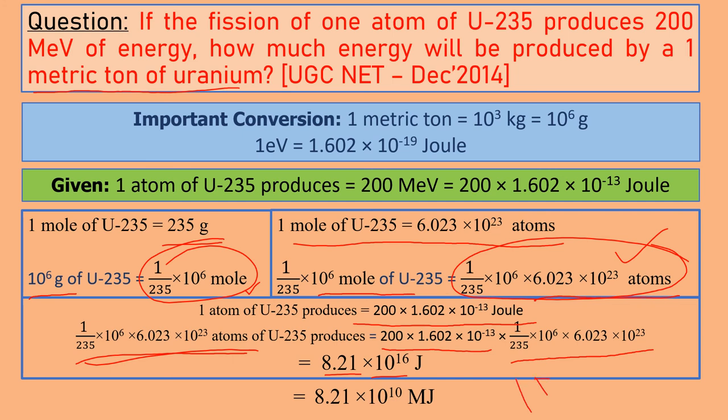We will convert 10^16 joules to megajoules. Dividing by 10^6, we get 8.21 × 10^10 megajoules. Thank you for watching the video, do not forget to like and share the video.